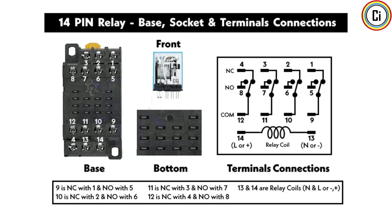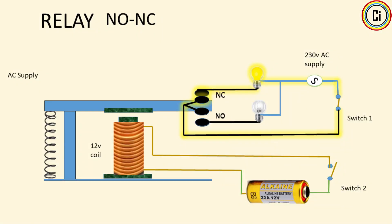The relay is built with a coil, iron core, moving armature, spring, and contacts inside a transparent housing. Out of the 14 pins, pin 13 and 14 are for the coil. The other 12 pins form four sets of common, normally closed (NC), and normally open (NO) contacts.